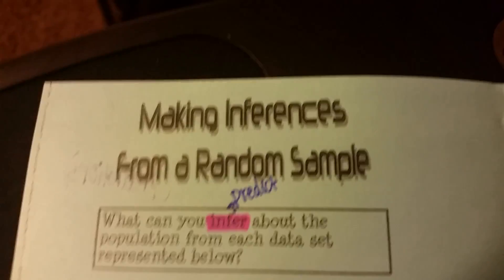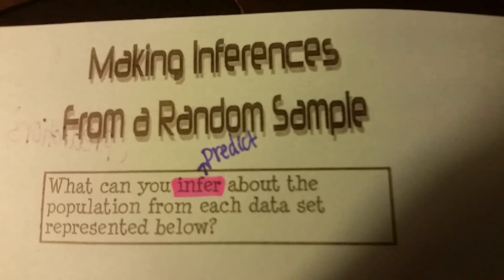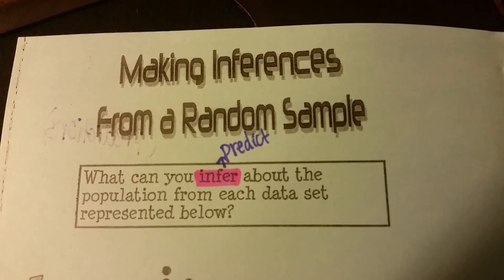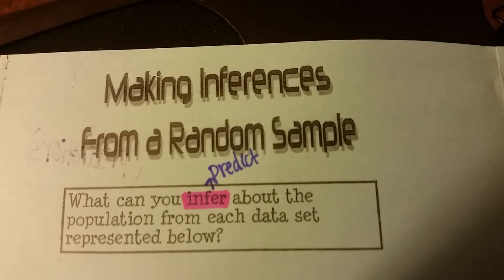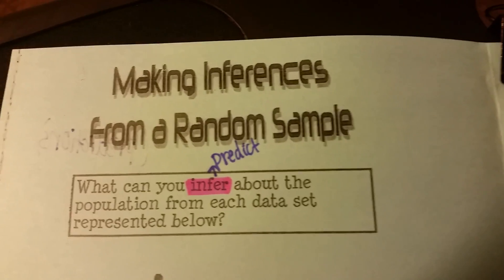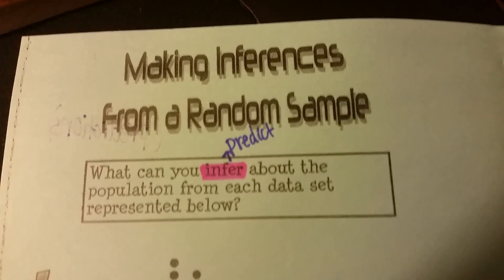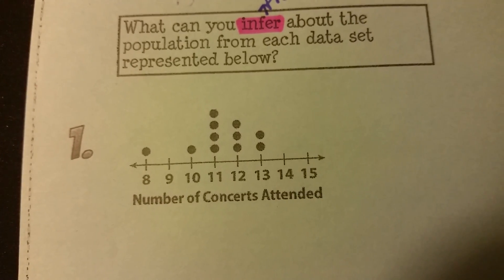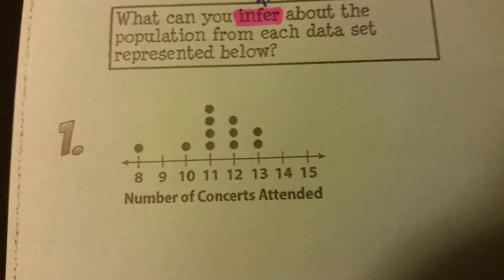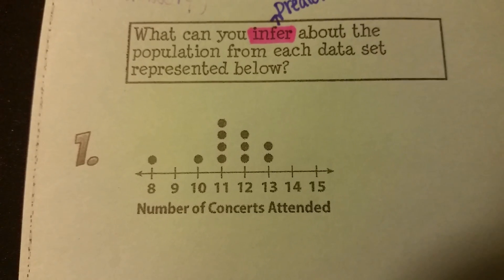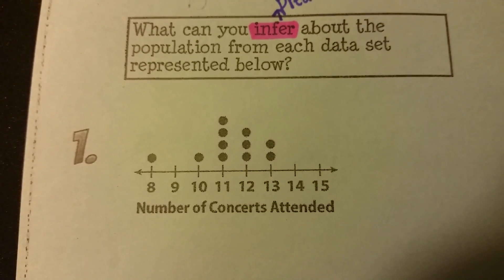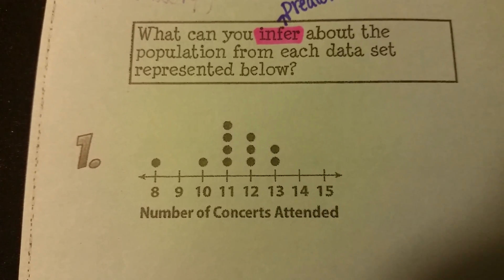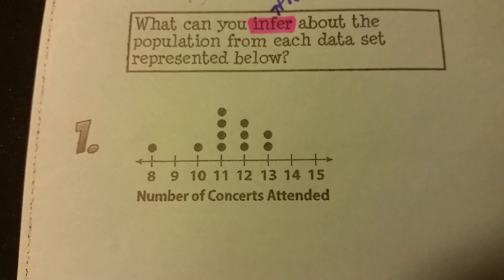Now we're going to make inferences from a random sample. The question says: what can you infer — and I highlight that and put 'predict' — what can you predict about the population from each data set represented below? First we're going to look at this dot plot visually and see what we can infer. I'm going to pause here and let you talk to your partner really fast to see what you notice about this dot plot.